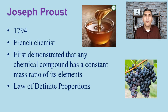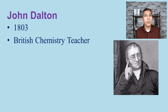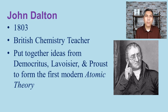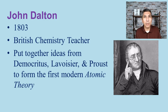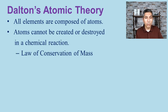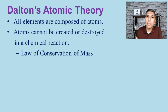Moving forward a few more years, we reach the British chemistry teacher John Dalton. Around 1803, he was able to take concepts from earlier scientists and explain them in terms of atoms, giving him credit for formulating the first atomic theory. He built on Democritus's concept of atoms and on Lavoisier's work, stating that all elements are composed of atoms and that atoms are not created or destroyed in a chemical reaction — explaining the law of conservation of mass.